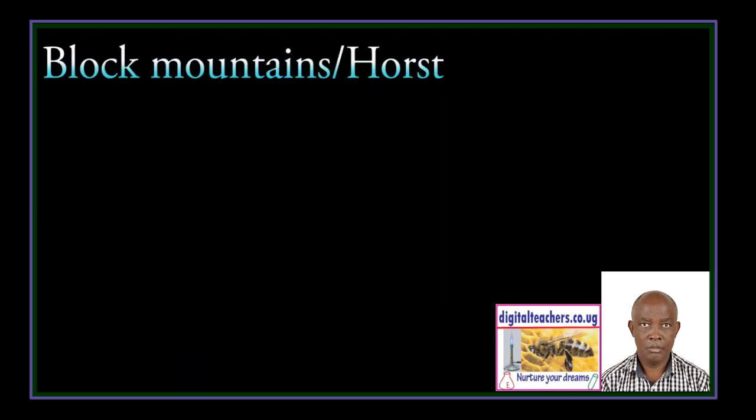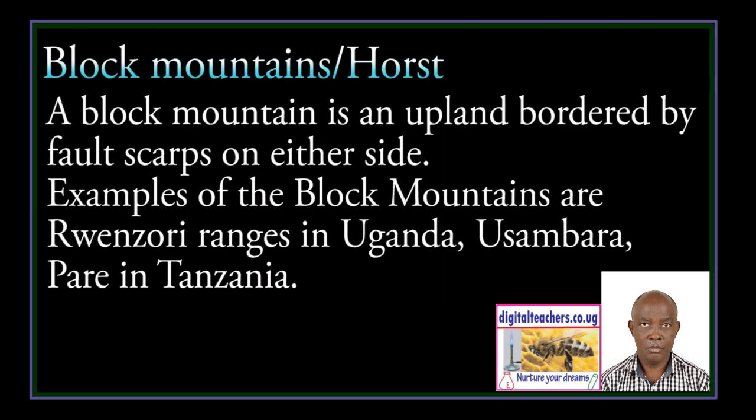Block Mountain — All Hosts. A Block Mountain is an upland bordered by fault scarps on either side. For example, Mount Renzole in Uganda, Usambara, and Pere in Tanzania.